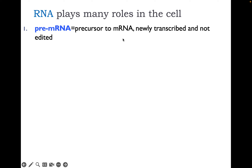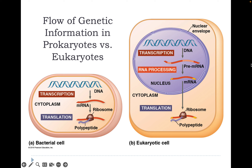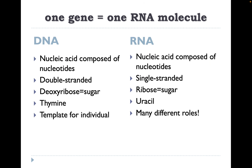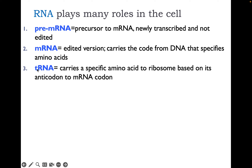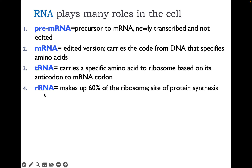Pre-mRNA is called the precursor to mRNA — it's newly transcribed but not yet edited. It exists in eukaryotic cells but not in prokaryotes, where extra processing occurs before the mRNA is ready for the ribosome. mRNA is the edited version that carries the code from DNA specifying the amino acids to produce the polypeptide. tRNA, or transfer RNA, carries a specific amino acid to the ribosome based on its anticodon to mRNA. Ribosomal RNA makes up 60% of the ribosome — the site of protein synthesis.